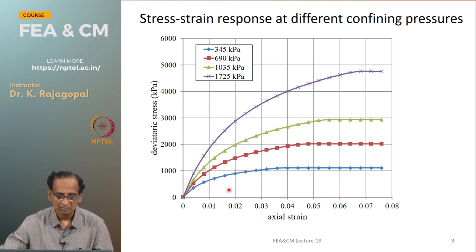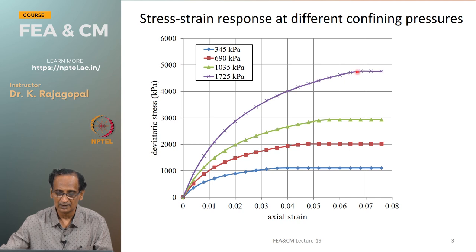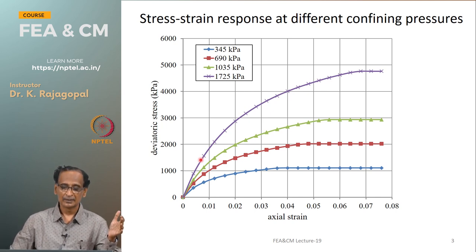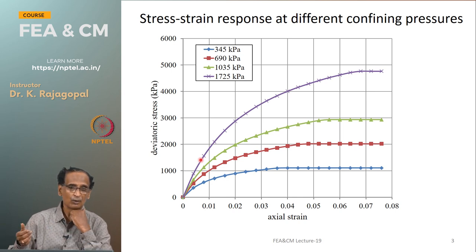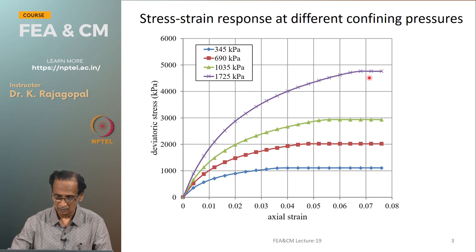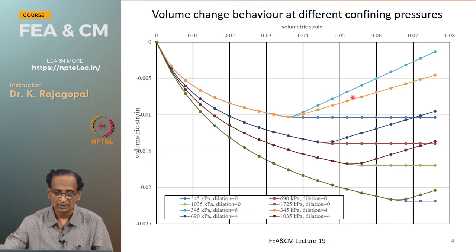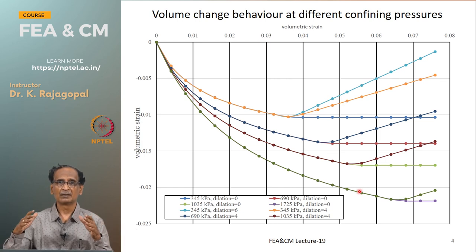In this figure, we have the response of soil at different confining pressures. On the x-axis we have axial strain, on the y-axis we have deviator stress, at 345, 690, 1035, and 1725 kPa confining pressures. As confining pressure increases, the strength increases and importantly the slope also increases - meaning the soil becomes stiffer. Stiffness controls deformations whereas strength controls bearing capacity and failure. Even the volume change response depends on confining pressure; at low pressure we have dilation, and at high pressure more volumetric compression.